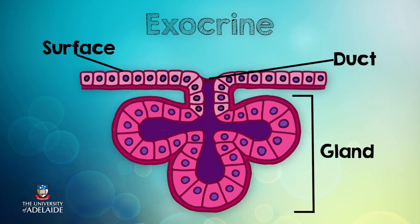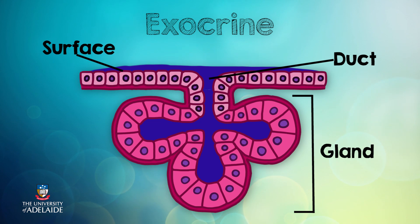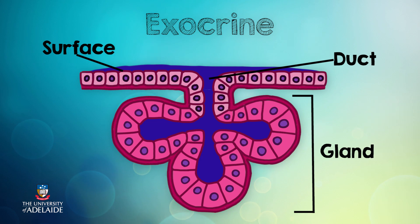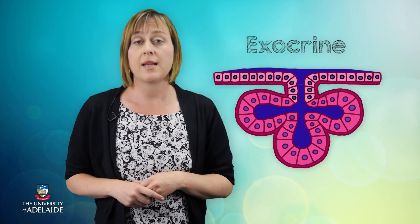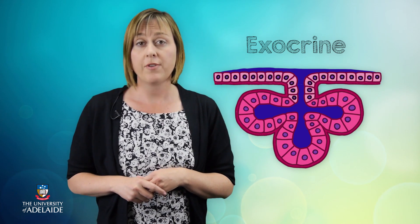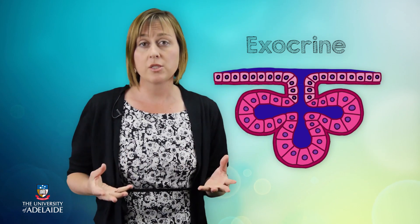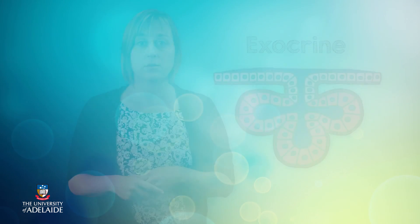Exocrine glands release their secretions into ducts, which empty onto a surface or into a cavity. For example, the pancreas secretes digestive enzymes that are emptied into the small intestine. In this presentation, we're going to investigate the structure and function of exocrine glands in more detail.